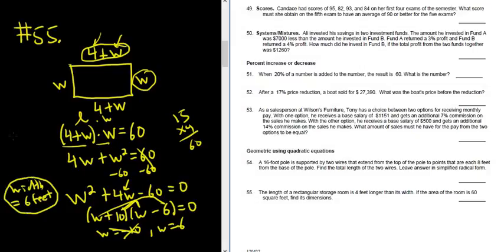And the length, it's 4 feet longer than the width, so it'll be 10. The length is 4 plus 6, right, 4 plus W. So 4 plus 6, so 10. So it's 10 feet. And those are the dimensions, the width and the length. I hope that made sense.